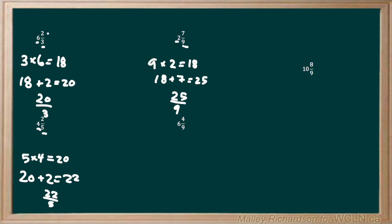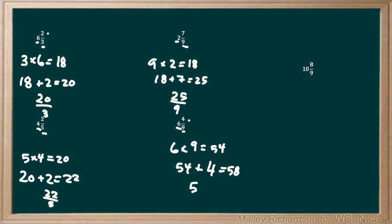Now moving on to 6 and 4 over 9. We take the denominator and multiply it by the whole number out front. So 9 times 6 gives us 54, and 54 plus the numerator of 4 gives us 58. So our new numerator is 58, and we keep the same denominator of 9, giving us 58 over 9. This makes sense because 58 is greater than 9.